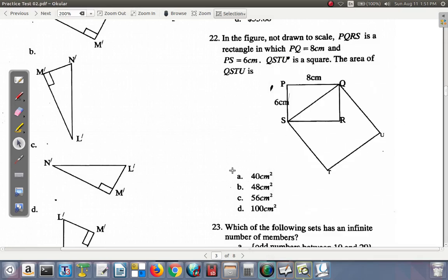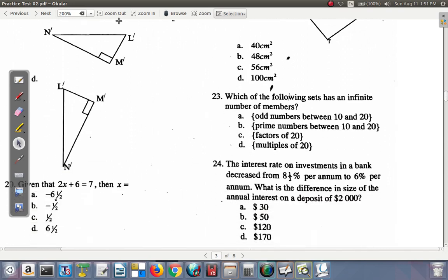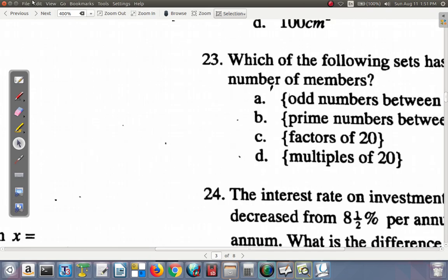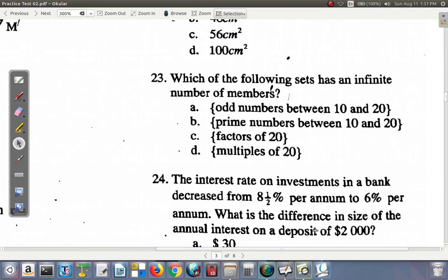That was question 22. You could take a look at question 23. It says, which of the following set has an infinite number of members? Odd numbers between 10 and 20. Well, it starts at 10 and stops at 20, so it's not A.